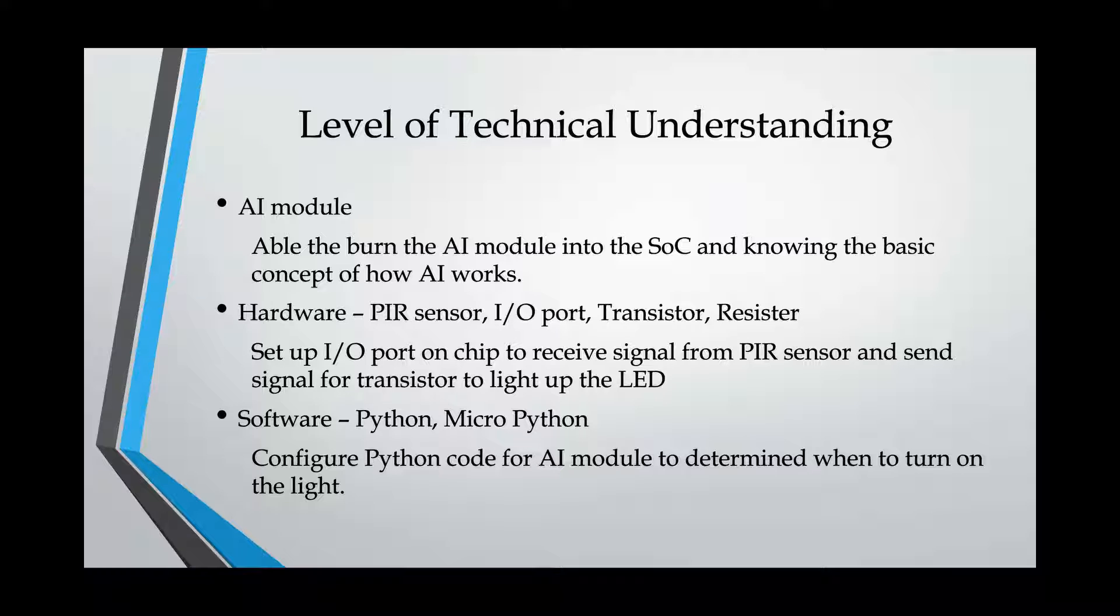Secondly, is the hardware. We are going to use PIR sensor, I/O port, transistor, resistor. We are able to set up I/O port on the chip to receive signal from PIR sensor and send signal out for transistor to light up the LED. And the resistor right here is for the LED. Because the LED cannot take that much of current, we need resistor to bring the current down.